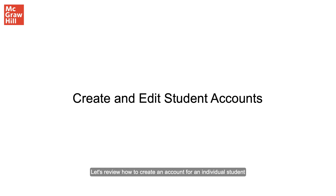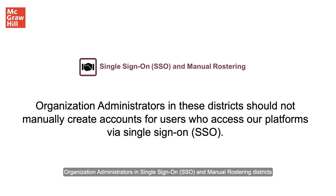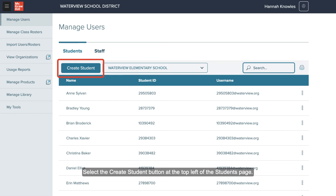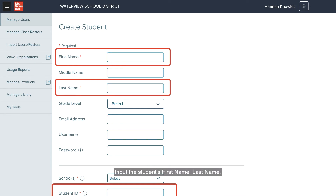Let's review how to create an account for an individual student and edit existing student accounts. Organization administrators in single sign-on and manual rostering districts should not create accounts for any user that will access our platforms from a district learning management system or single sign-on portal. Select the Create Student button at the top left of the Students page. Input the student's first name, last name, and school or district issued ID number.